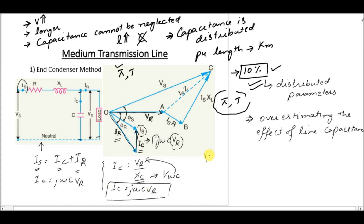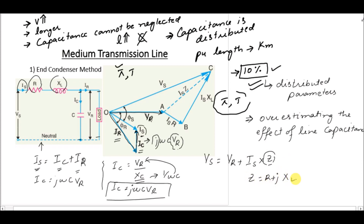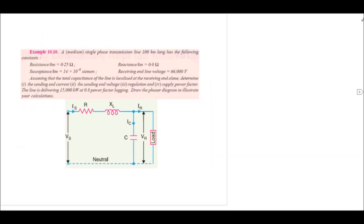To calculate the sending end current, IS = IC + IR. The sending end voltage is VS = VR + IS × Z, where the line impedance Z = R + j·XL. This is the brief discussion about the end condenser method of representing a medium transmission line.